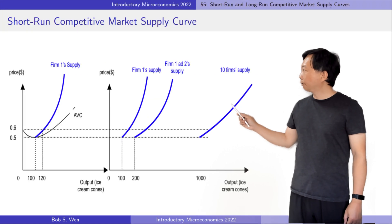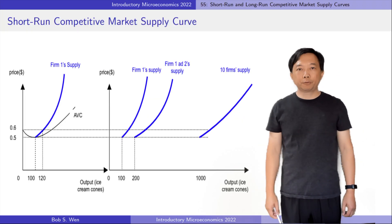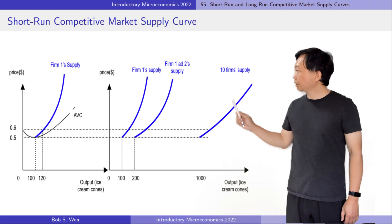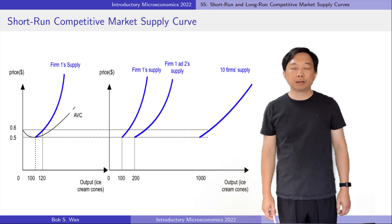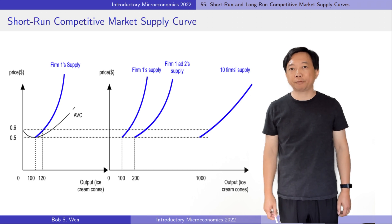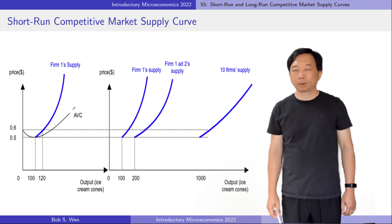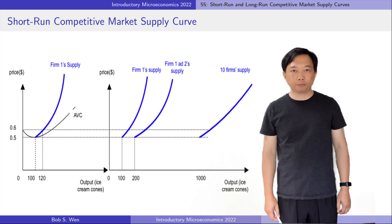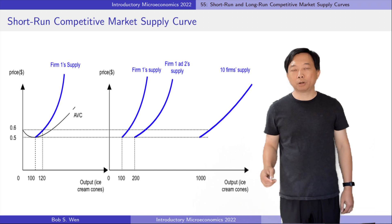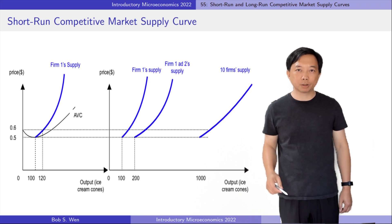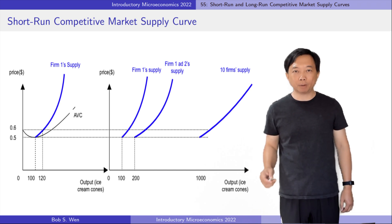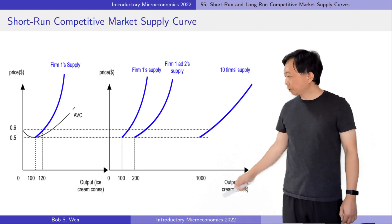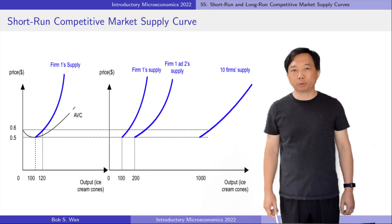As shown in the graph, each individual firm's supply curve is identical. So the market supply of ice cream cones at any price is 10 times the supply of an individual firm. The left graph is the short run supply curve of a single ice cream firm — it is the portion of its short run marginal cost that lies above the minimum of its average variable cost. The horizontal axis shows the output of an individual ice cream firm.